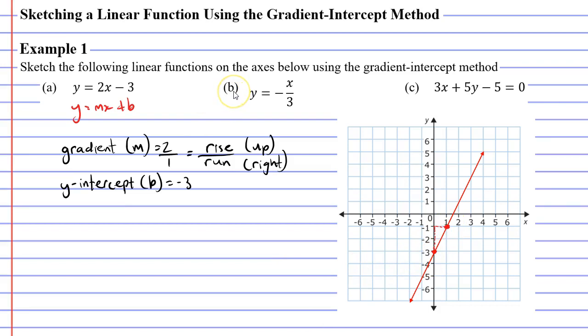All right let's now look at question b. We have y equals negative x over 3. So I'll just write down our gradient intercept form y equals mx plus b.